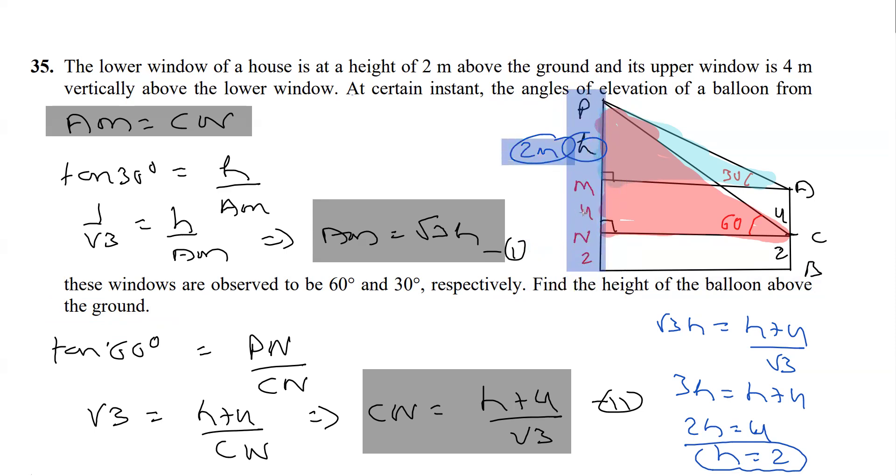H is 2, so it's 2 plus 4 plus 2. That is, we can say the height PL is what we have to get, which is 2 plus 4 plus 2, that is equal to 8 meters. Let's read our answer.